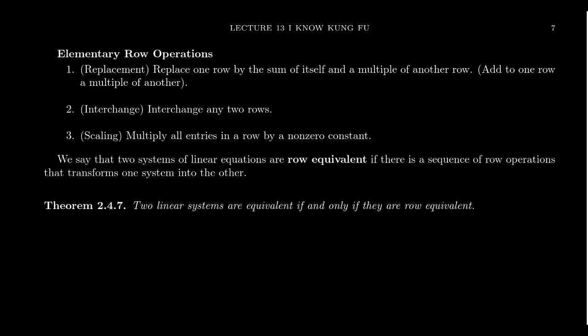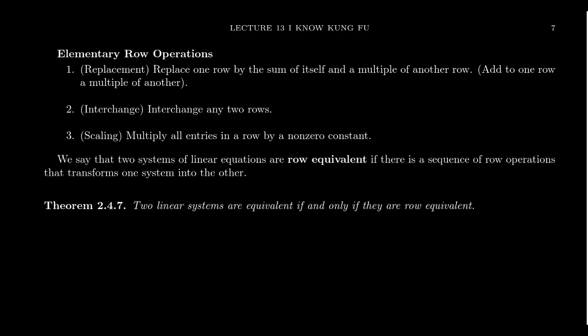What's important here is this theorem: two linear systems are considered equivalent if and only if they're row equivalent. Row equivalent means there's a sequence of row operations that transforms one system into the other. For two systems of equations to be equivalent means they have the same solution set. So what this theorem tells us is that performing row operations to a linear system does not change the solution set, so we can row-reduce the augmented matrix into echelon form, thus solving the system.